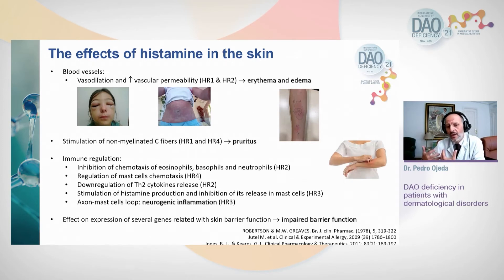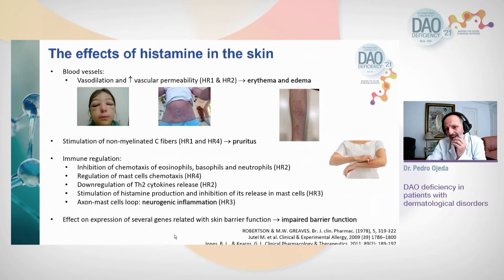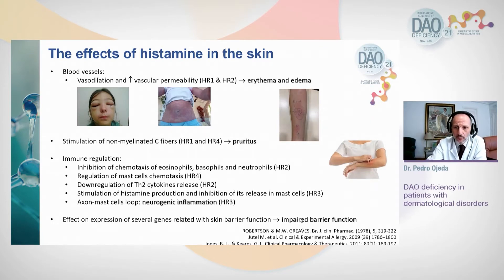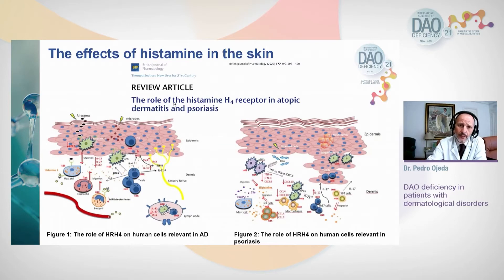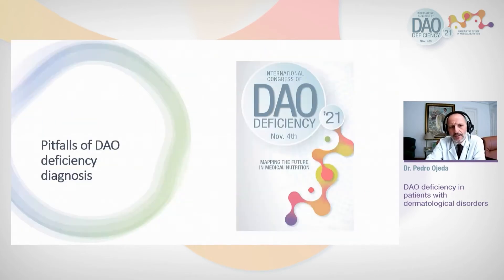Histamine is also an important immunoregulator through H4, with regulation of chemotaxis, downregulation of Th2, and involvement in neurogenic inflammation through the relationship between mast cells and axons via the H3 receptor. Additionally, excess histamine directly affects gene expression related to barrier function, which could lead to an alteration of the cutaneous barrier. There are recent review articles on the role of the H4 receptor in dermatitis and psoriasis through complex pathways.